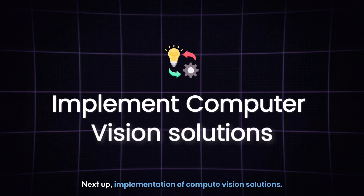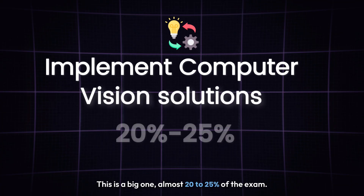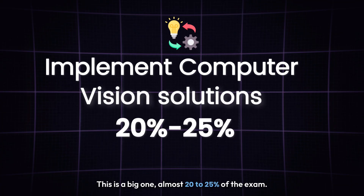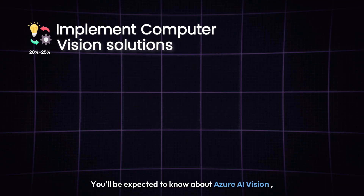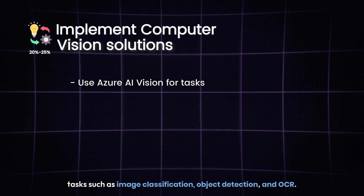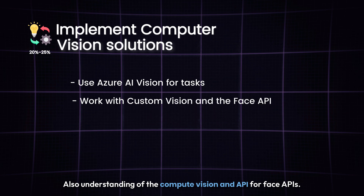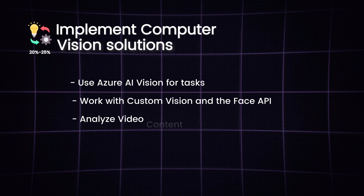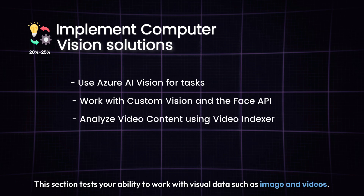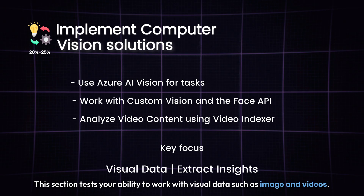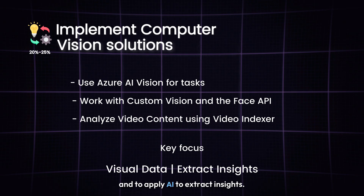Next up is Implementation of Computer Vision Solutions. This is a big one — almost 20 to 25% of the exam. You'll be expected to know about Azure AI Vision tasks such as image classification, object detection, and OCR, as well as the Computer Vision and Face APIs. This section tests your ability to work with visual data such as images and videos and to apply AI to extract insights.